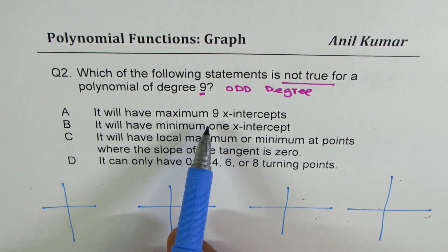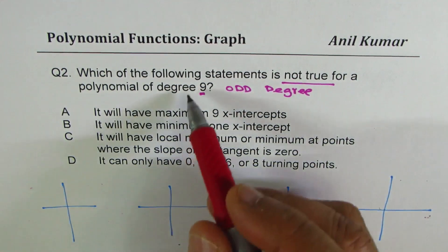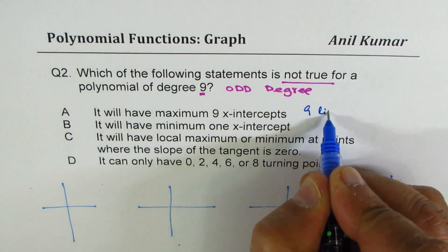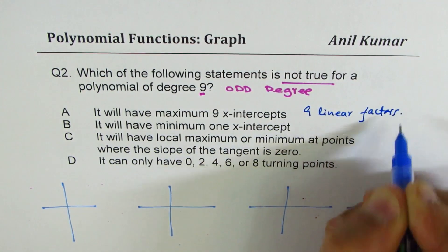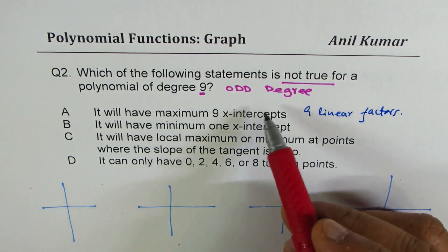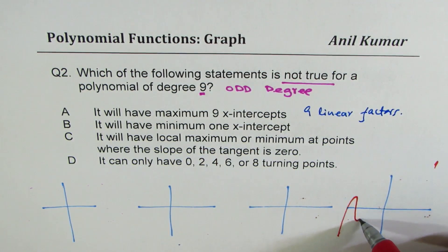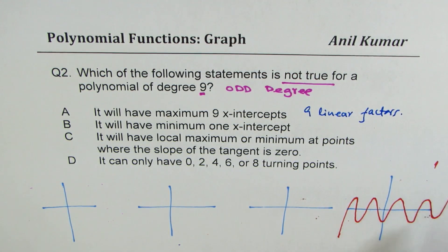A: It will have a maximum of 9 x-intercepts. Well, that is correct. A degree 9 function could have all linear factors. Since it starts from one end and ends at the other, you could have 9 x-intercepts. So that works.